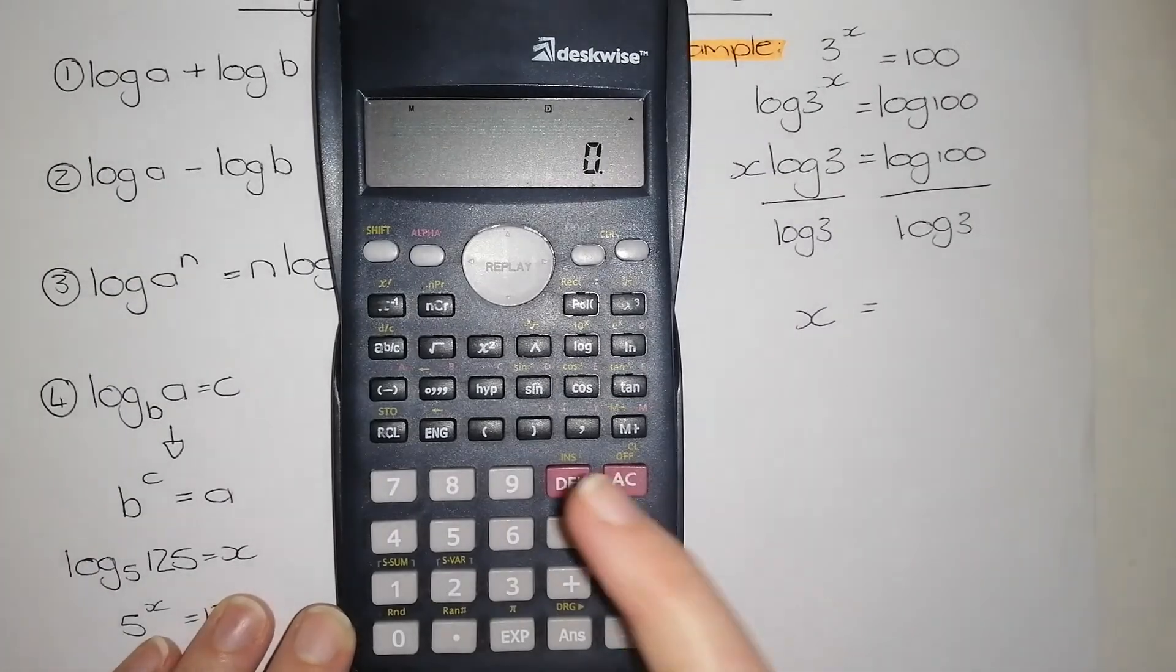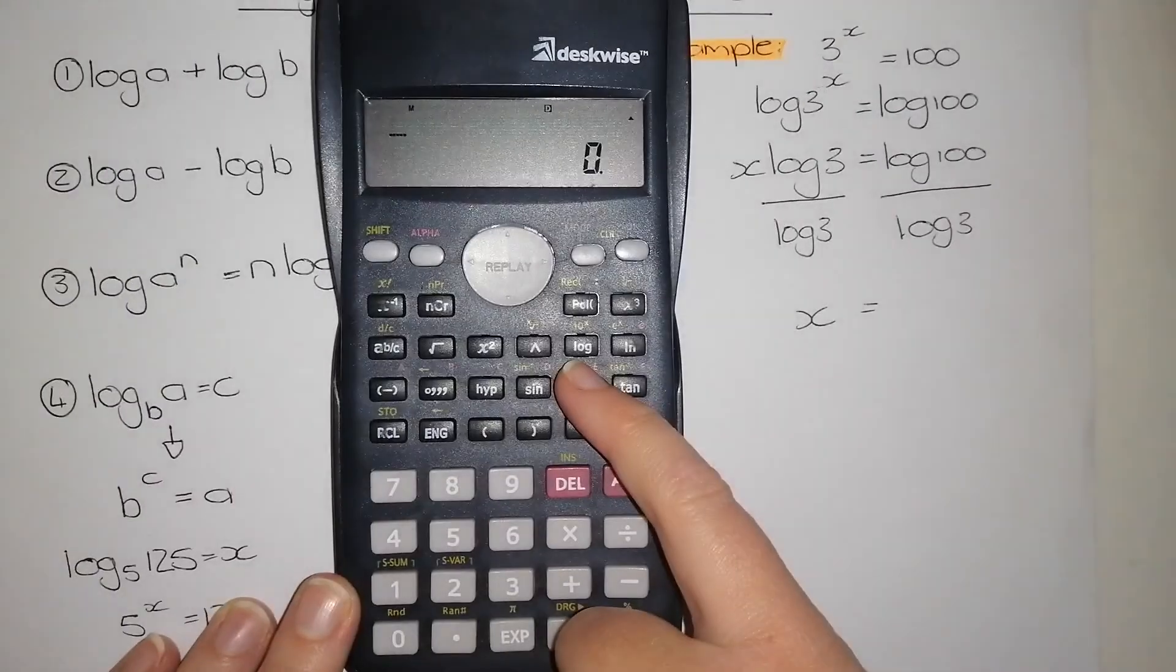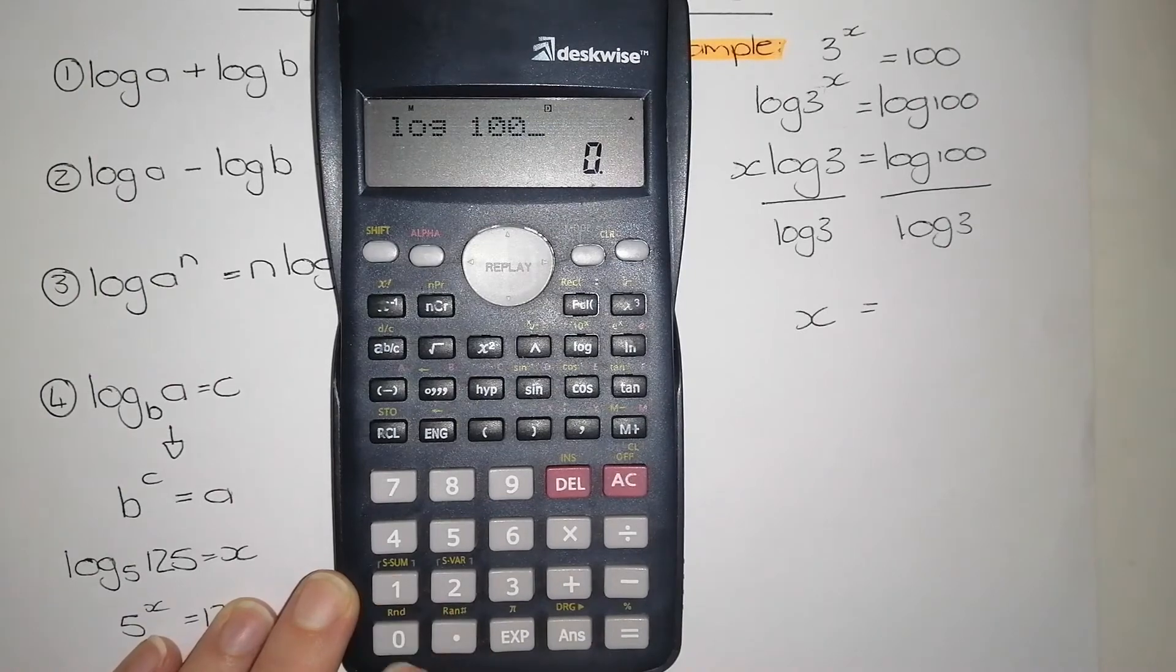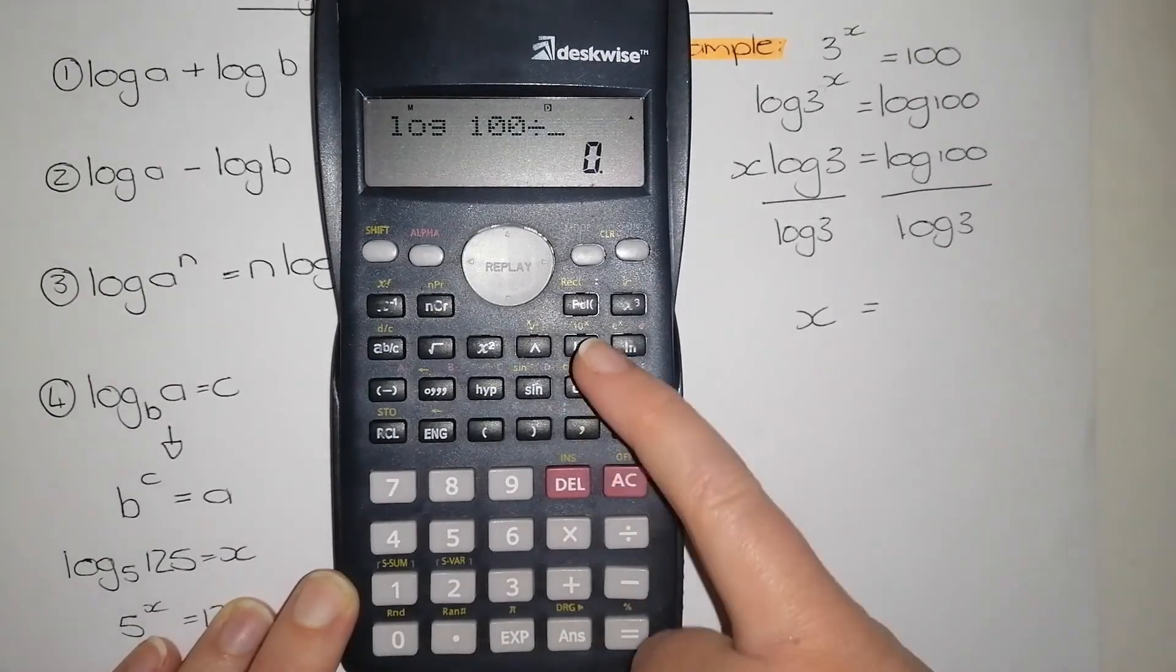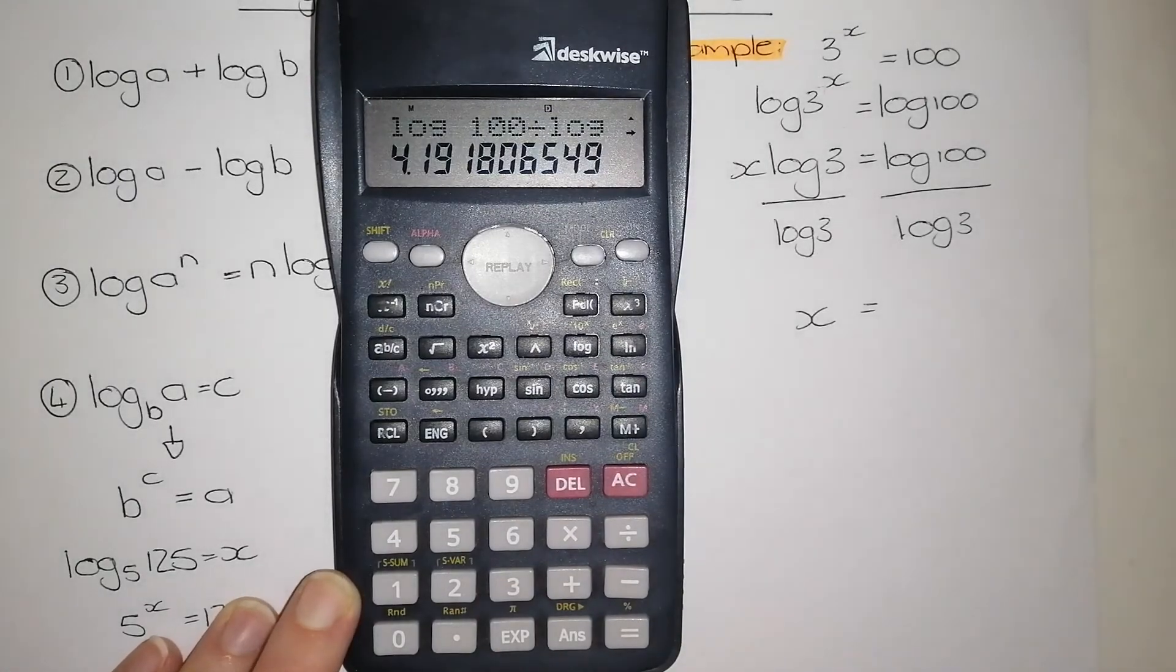When we type it into our calculator, you will see that you have a button that says log. So, we're going to push that button, so we're going to have log of 100 divided by log of 3, and that is equal to 4.19.